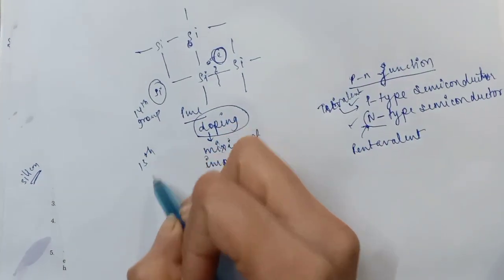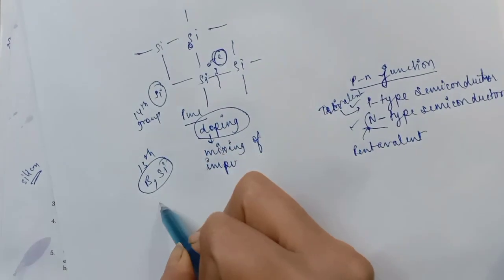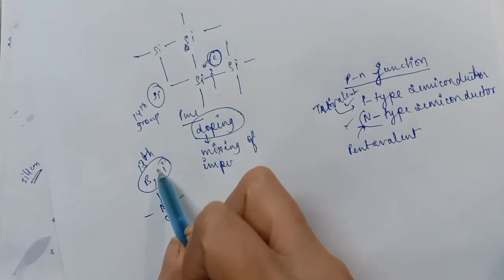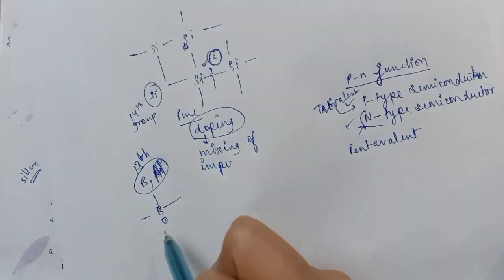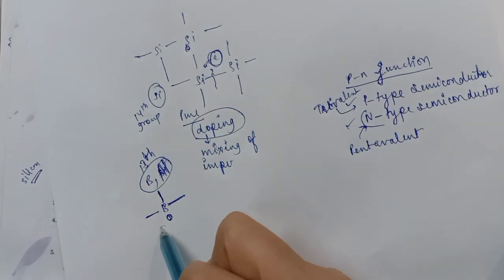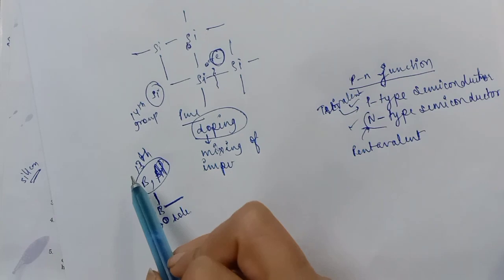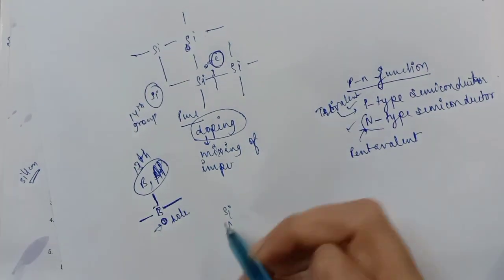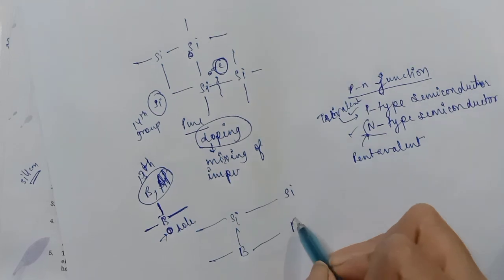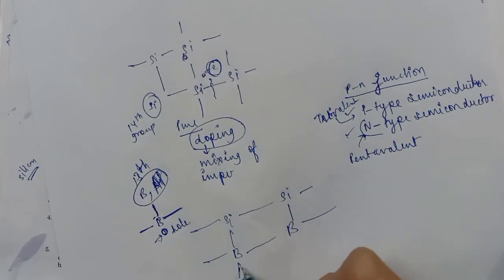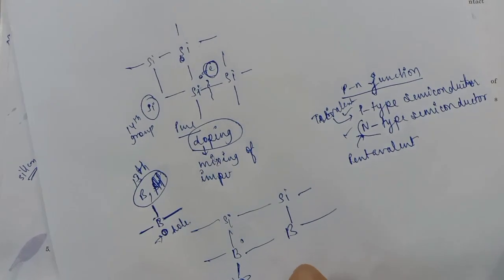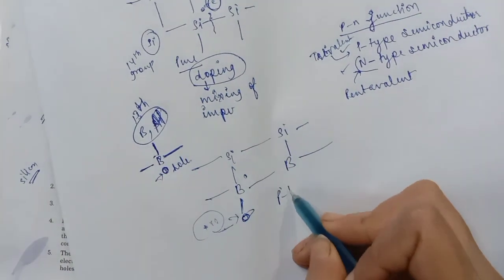The 13th group elements — boron, aluminium — have three electrons in the outermost shell. When boron is added to silicon, it has only three electrons available for bonding, so there is one absent electron — this absence is called a hole. This is the trivalent impurity. Adding boron to a silicon crystal creates a P-type semiconductor, where holes are the majority carriers representing positive charge.